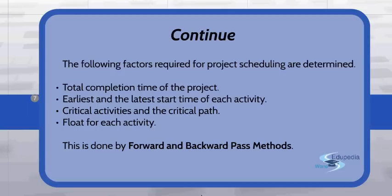The following factors required for project scheduling are determined by these methods: first, the total completion time of the project; next, the earliest and latest start time of each activity; and the start and finish time of each activity, the critical activities, and the critical path.